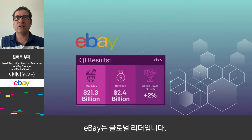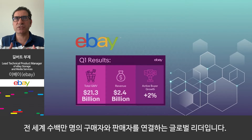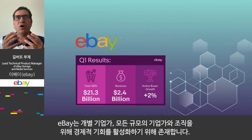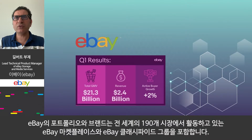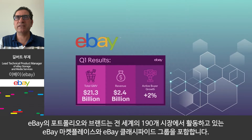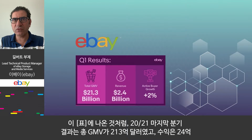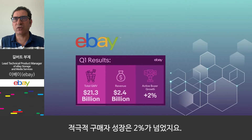eBay — who we are. eBay Inc. is a global commerce leader that connects millions of buyers and sellers around the world. We exist to enable economic opportunities for individual entrepreneurs, businesses, and organizations of all sizes. Our portfolio and brands include eBay Marketplace and eBay Classified Group, operating in 190 markets around the world. Sharing in this table also our last quarter 2020 Q1 results: 21.3 billion of total GMV, 2.4 billion of revenue, and over 2% of active buyer growth.